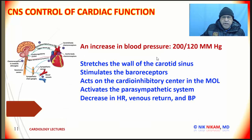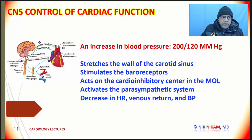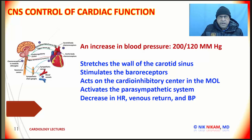Let's take a scenario where we have a blood pressure of 200 over 120 mmHg. This increase in blood pressure — both systolic and diastolic — leads to stretching of the aorta and the carotid baroreceptors, which send signals through the glossopharyngeal and vagal nerves to the cardio-inhibitory center. The cardio-inhibitory center works through the parasympathetic system, thus decreasing the heart rate, decreasing venous return, and reducing blood pressure. That's how a reflex mechanism is built in to counteract significant fluctuations in blood pressure.